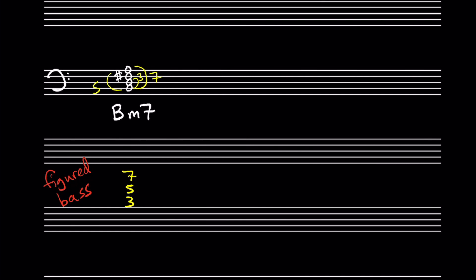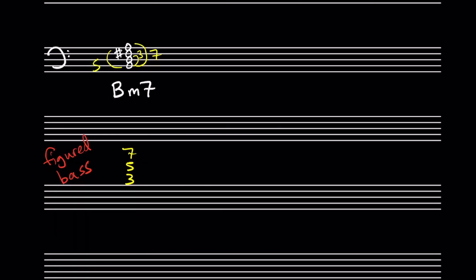Here we would get 7-5-3 as the full figured bass symbols, since this chord contains a third, fifth, and seventh above the bass note. As with triads, we usually use an abbreviated form of the figured bass. Here we would just write seven for the root position seventh chord.